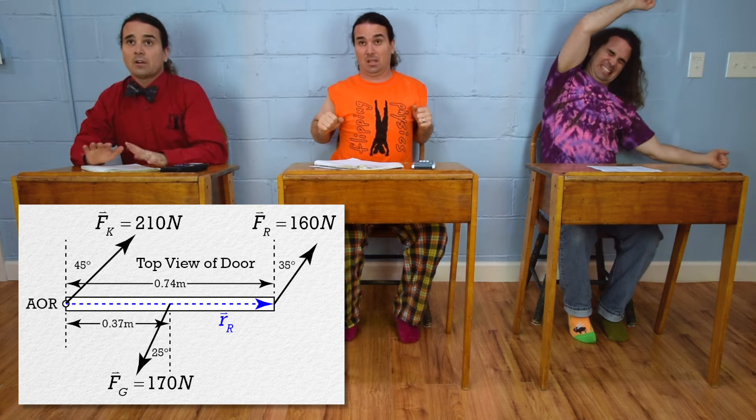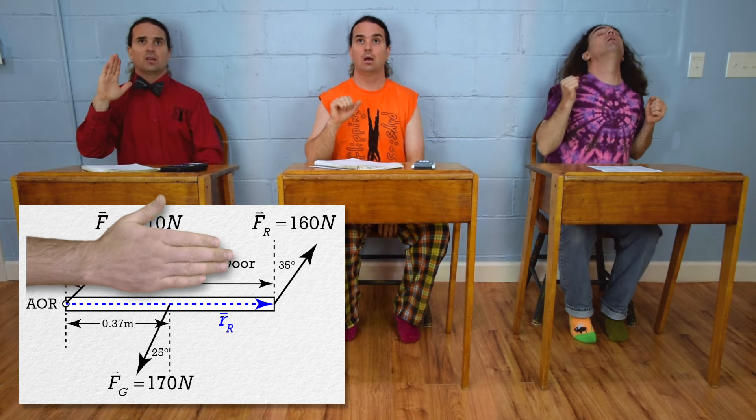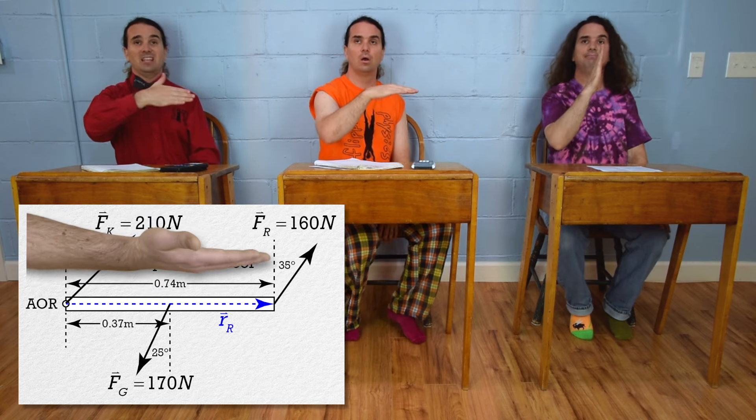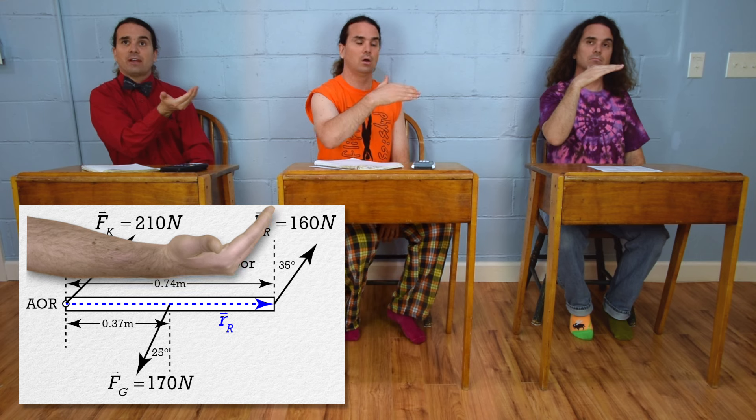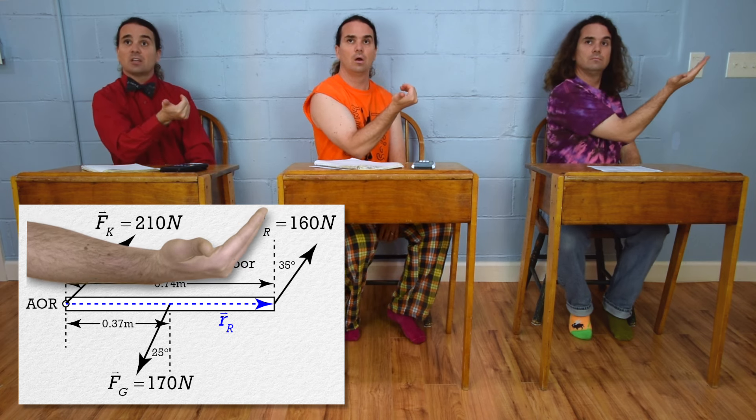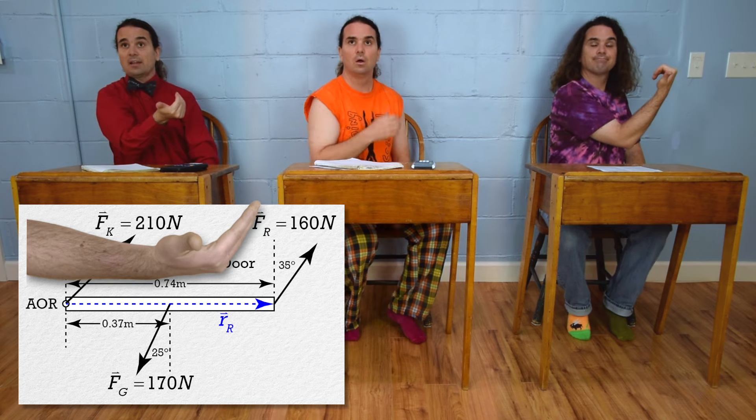For Ryan's torque, we start with the fingers of my right hand at the axis of rotation, point my fingers toward Ryan's force, and curl my fingers in the direction of Ryan's force, and stick out my thumb. My thumb points out from the illustration, which is counterclockwise from where you are, so that's positive. Ryan's torque is positive.